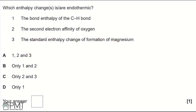Which enthalpy changes are endothermic? 1: Bond enthalpy of C–H bond. 2: Second electron affinity of oxygen. 3: Standard enthalpy change of formation of magnesium. Options: A: 1, 2 and 3. B: Only 1 and 2. C: Only 2 and 3. D: Only 1.